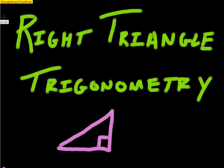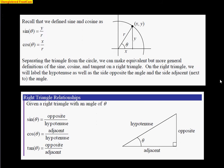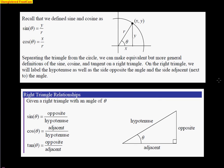This video is over right triangle trigonometry, which for the most part should be nothing but a review for most of you, so it should be fairly easy. Recall that we define sine and cosine as a relationship between y and r, and x and r, based on this scenario right here.